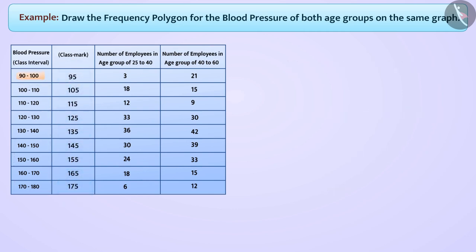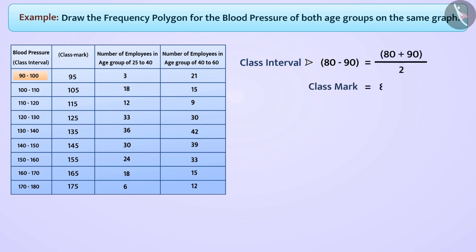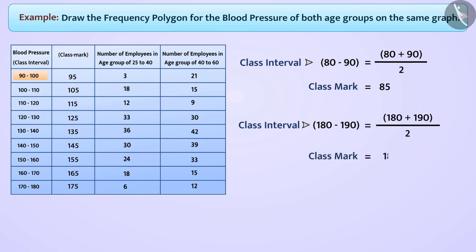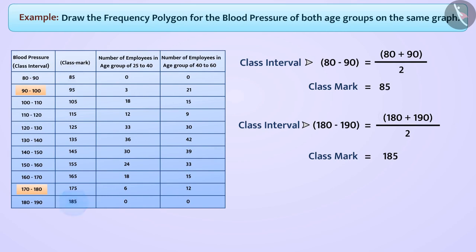Now, before taking class interval 90 to 100, we will take class interval 80 to 90 with frequency 0, whose class mark is 85. Similarly, we will take class interval 180 to 190 with frequency 0, whose class mark is 185, after class interval 170 to 180. In this way, the class marks range from 85 to 185.